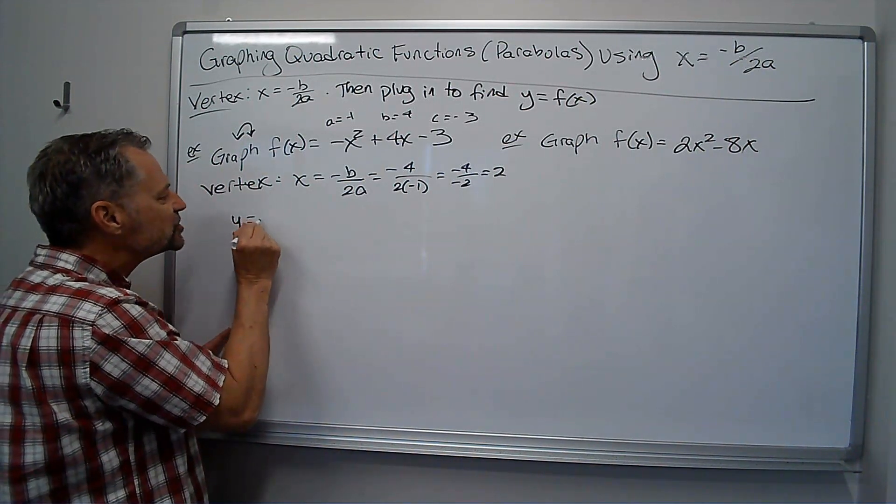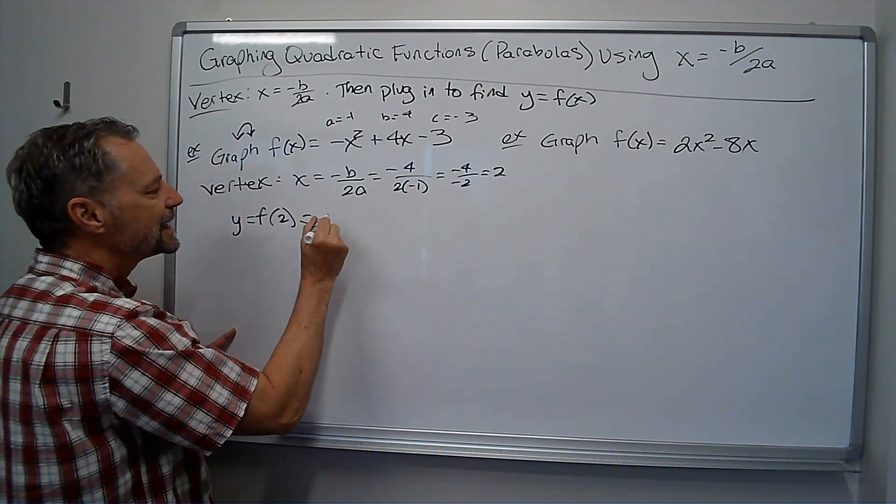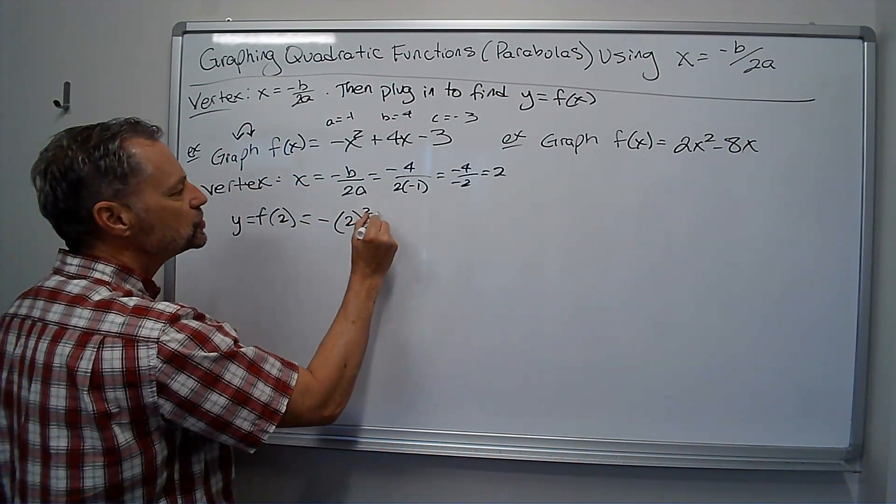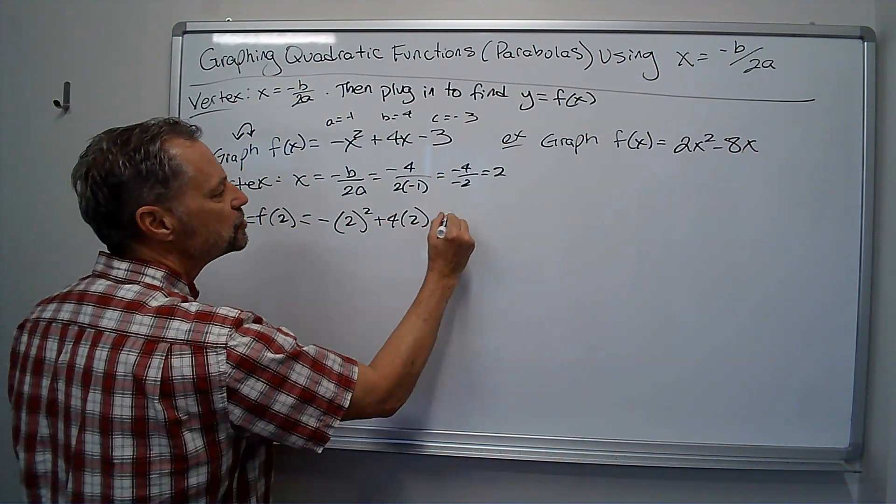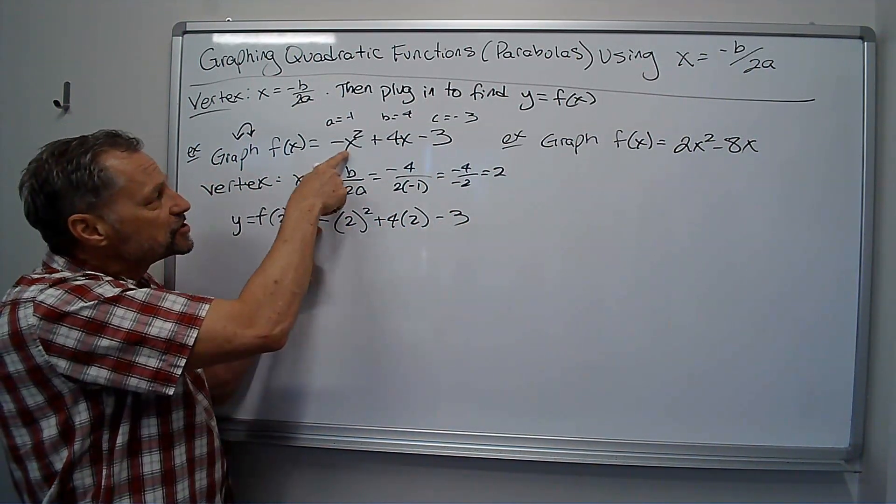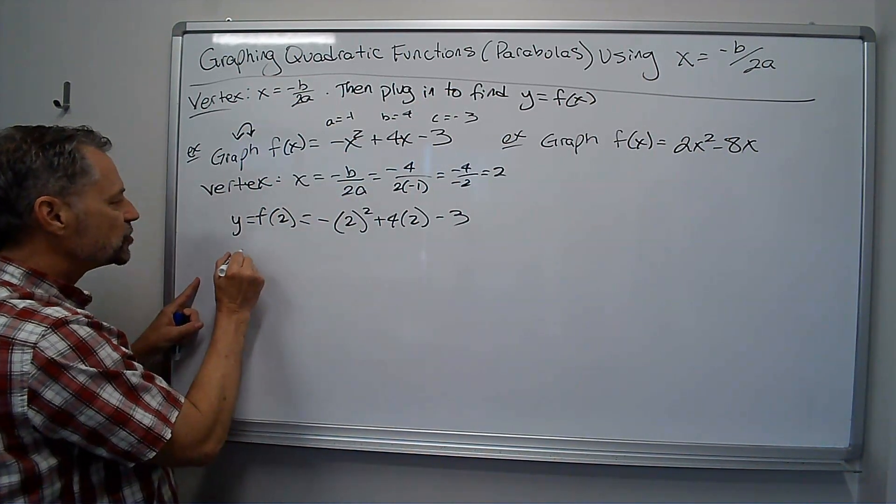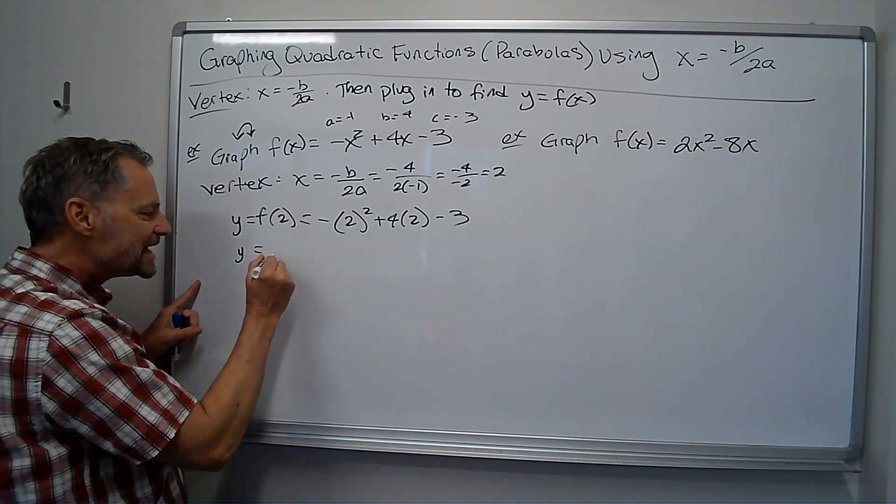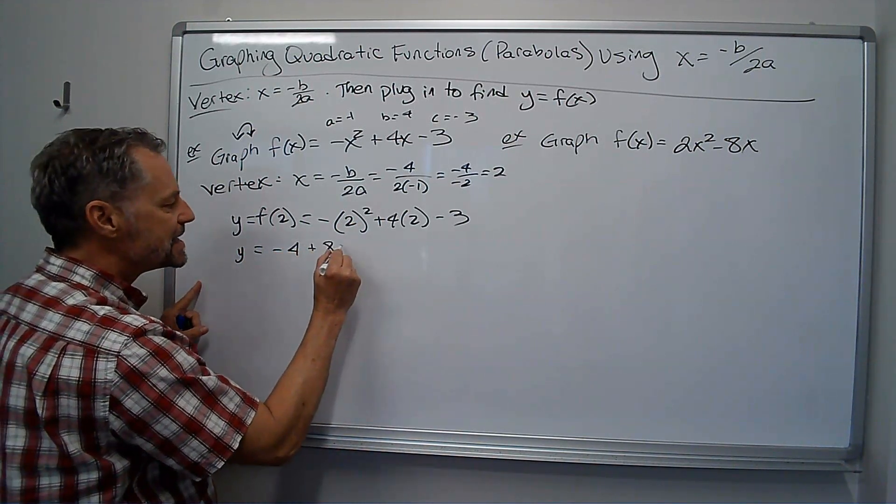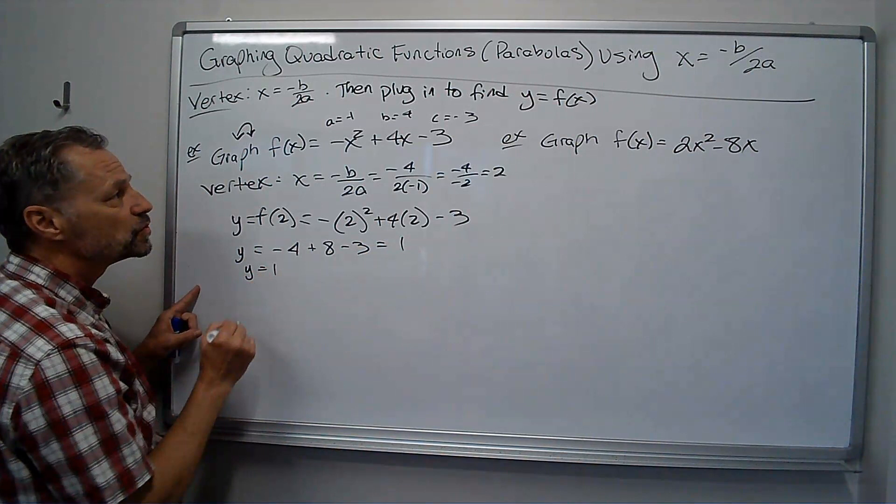So my y value is just f of 2. So I plug that into the original problem. And I get negative 2 squared plus 4 times 2 minus 3. Notice I'm not squaring the negative 2 because the x is being squared, not the negative. So my y value is going to be negative 4 plus 8 minus 3. 4 minus 3 is 1. So my y value is 1.